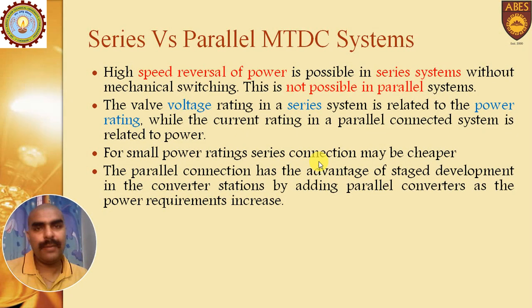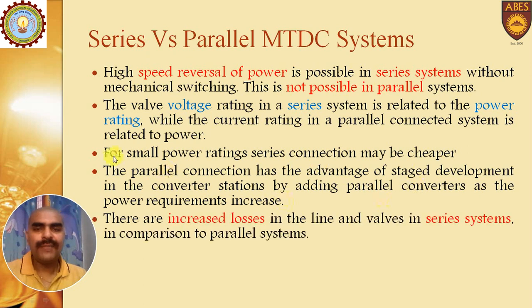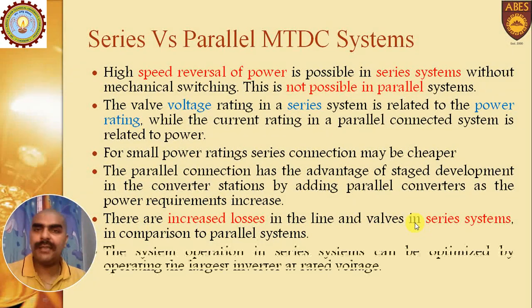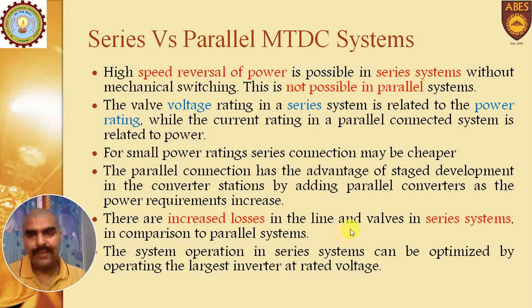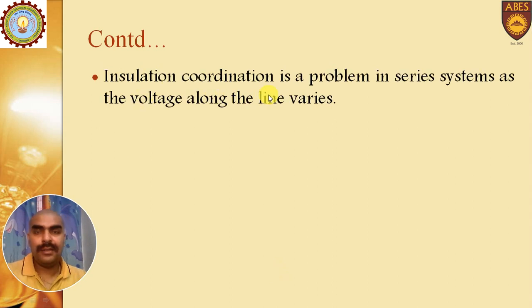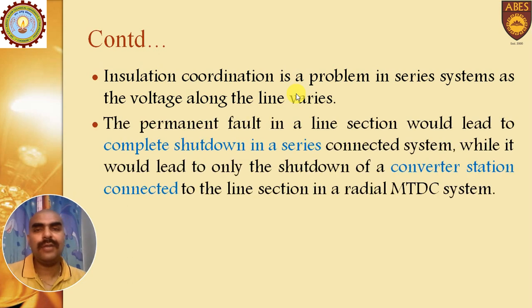Parallel MTDC system has the flexibility that we can add converter stations in parallel if power requirements increase. Then, there are increased losses in the line involved in series system as compared to parallel. Also, system operation in series system can be optimized by operating the largest inverter at rated voltage. Furthermore, series insulation coordination is a problem because voltage along the line varies while current is constant.